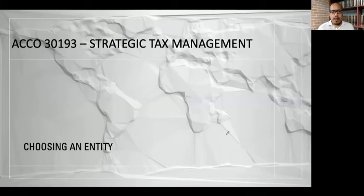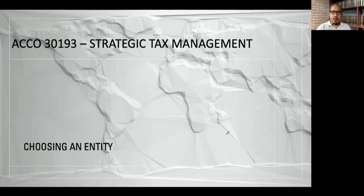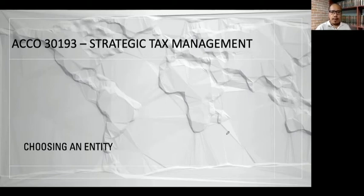Hello, welcome back. This is another lecture video for ACO 3193, Strategic Tax Management. In this lecture video, we will continue with our discussion on the topic of choosing an entity. From the previous lecture video on choosing an entity, we have discussed the different forms of organizations — the more prominent ones: sole proprietorship, partnership, and corporation. We already discussed the strategy portion, the major distinctions among the three forms of organization. For this lecture video, we will now concentrate on the tax aspect of the three forms of organization.